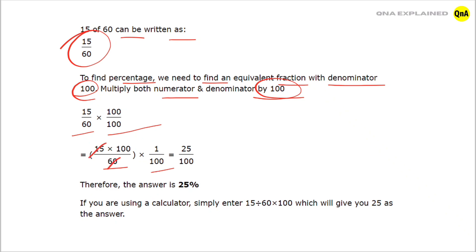15 fours are 60, 4 twos are 8, 4 fives are 20. So after solving it we get 25 upon 100.